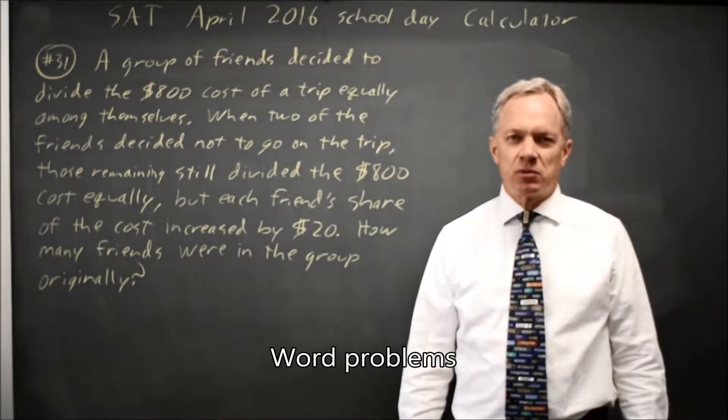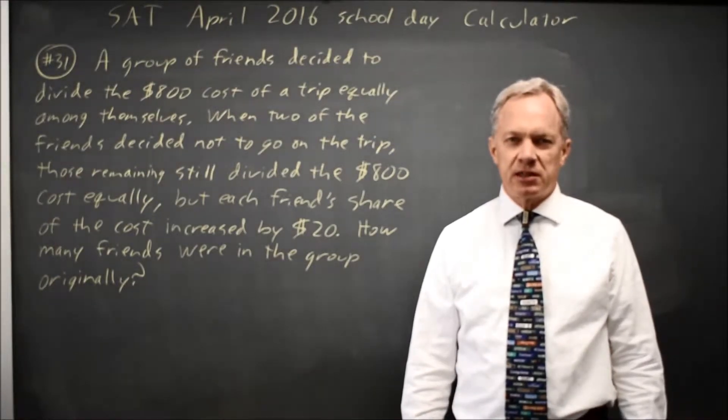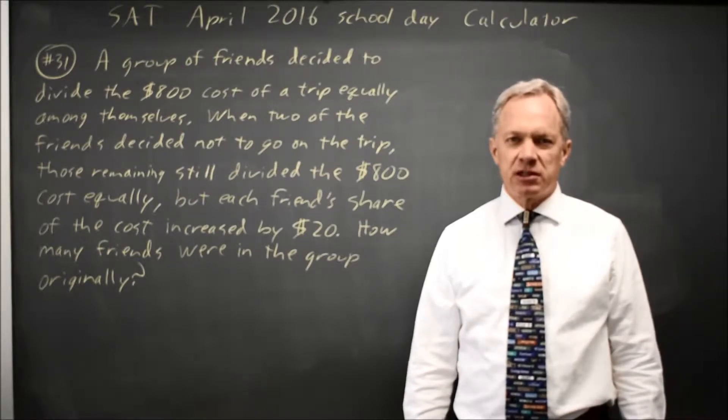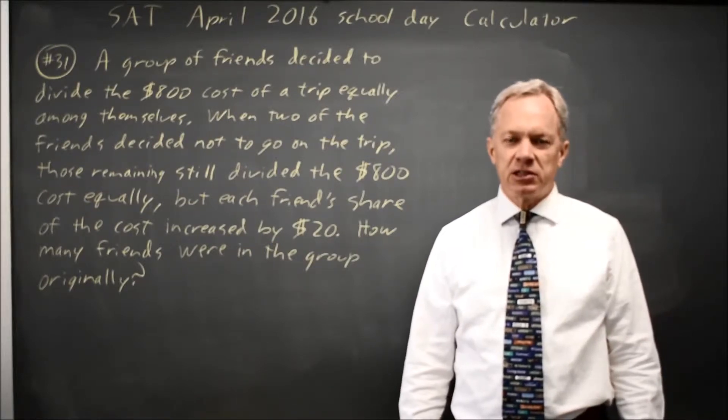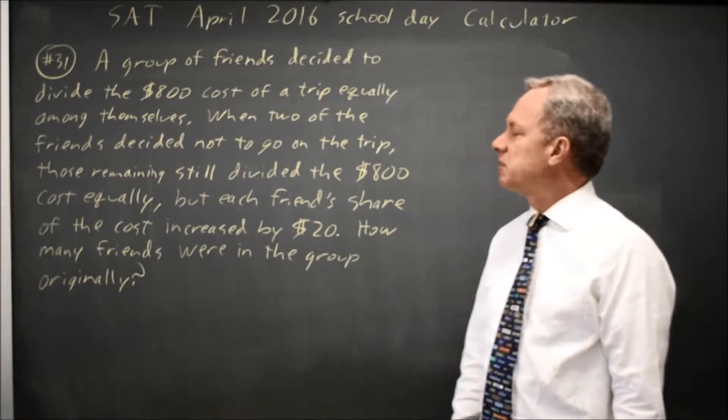This is calculator question number 31 from practice test 6 in the 2018 SAT prep book from College Board. It's also April 2016 SAT. College Board gives us a word problem about friends sharing a vacation's price.